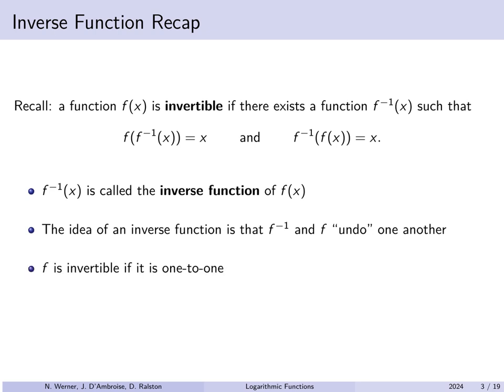Now a function is invertible if it is one-to-one. In terms of the graph of the function, this means it must pass the horizontal line test. Any given y value or horizontal line must intersect the graph only once — possibly not at all, but definitely not more than once. So anything that is in the range is only in the range once.